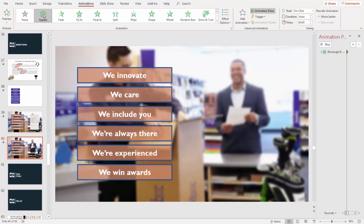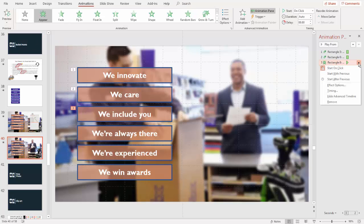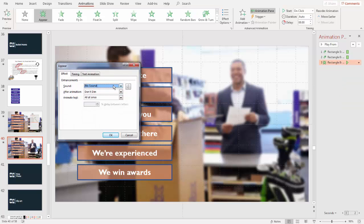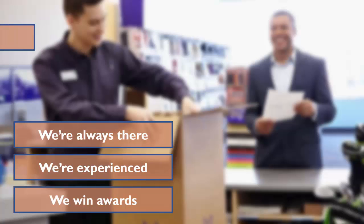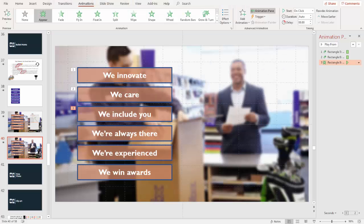You can also have something simply appear. I'll click on Appear, then go to Effect Options. You can have it delay or something else, but again just keep it simple. That one is simply going to appear and it will be instantaneous — we innovate, we care, and we include you. As you can see that one popped in because it has an Appear animation.